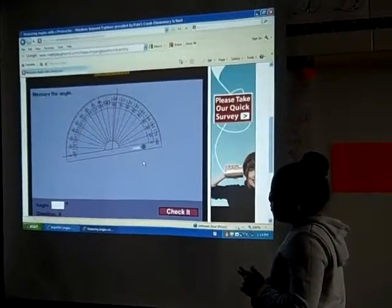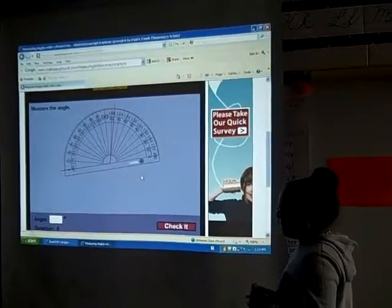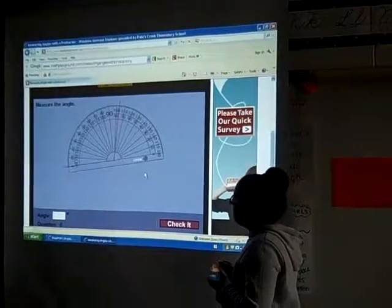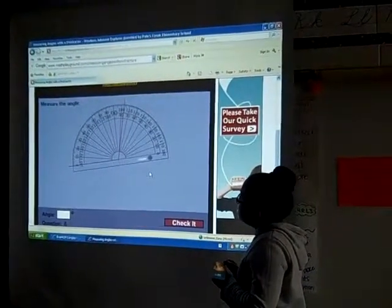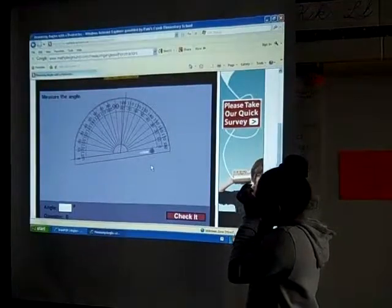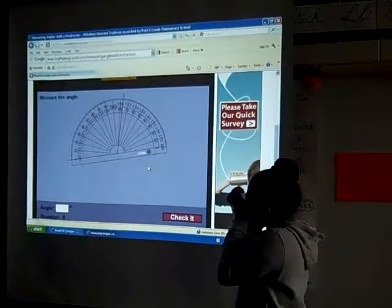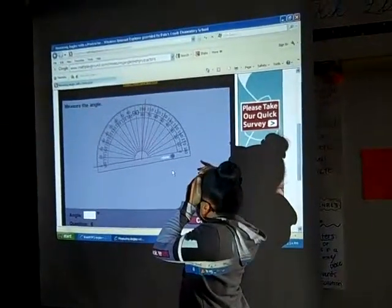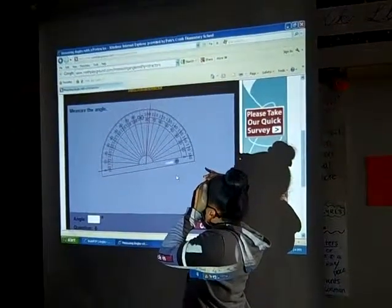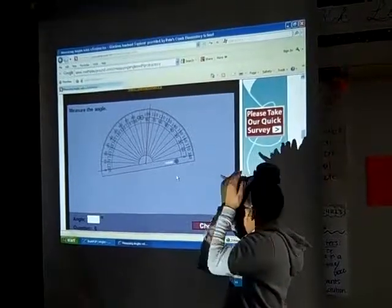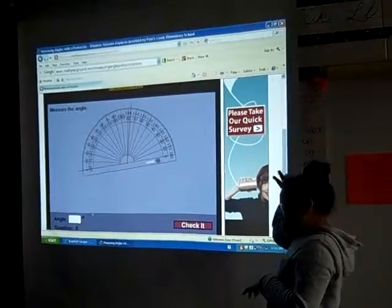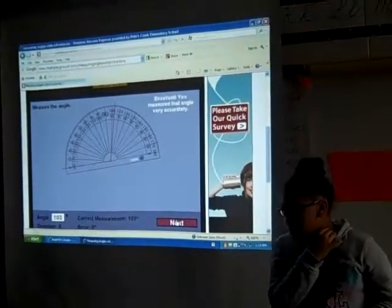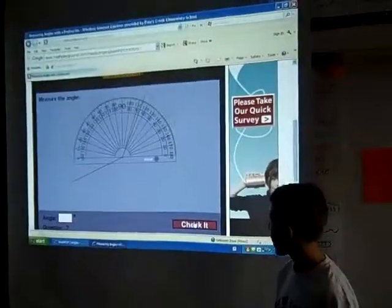So should you use the top scale of numbers or the bottom scale of numbers? The top. Okay. Go ahead and tell me what measurement you were believing to see. It's between 100 and 105. Okay. You're thinking 103. Nice job. Right on. Very good. Can you see? Obtuse.